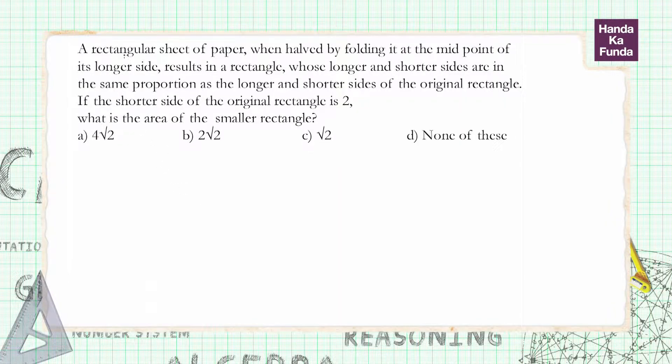We are given a rectangular sheet of paper. When halved by folding it at the midpoint of its longer side, it results in a rectangle whose longer and shorter sides are in the same proportion.